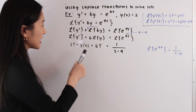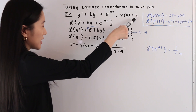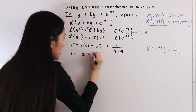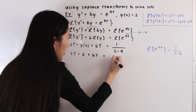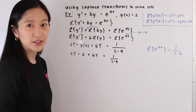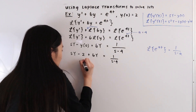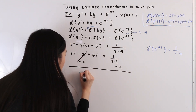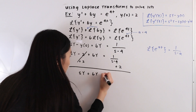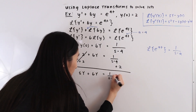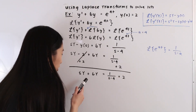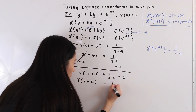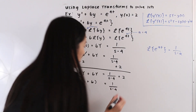Now let's plug in our initial condition. We know y(0) = 2, so we have s·Y - 2 + 6Y = 1/(s - 4). Moving the 2 to the other side gives s·Y + 6Y = 1/(s - 4) + 2. Factoring out Y: Y·(s + 6) = 1/(s - 4) + 2.